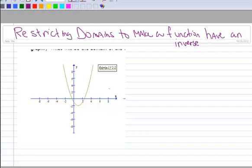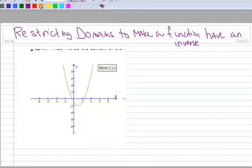All right, so now we're going to learn how to restrict a domain to make a function have an inverse. We're going to make it have an inverse. So I want to restrict its domain. In other words, I want to get rid of part of the function that's a duplicate.